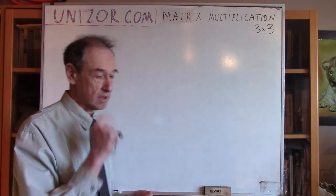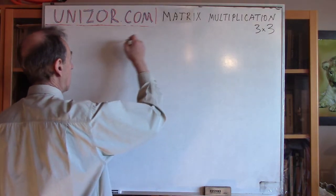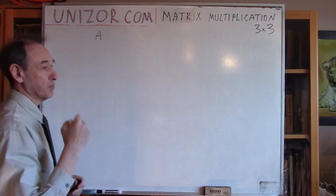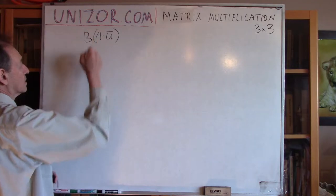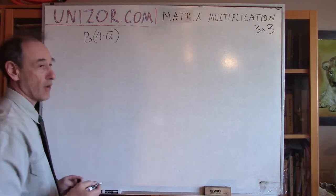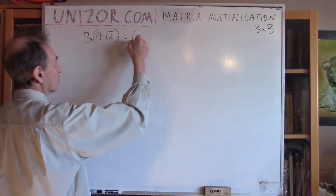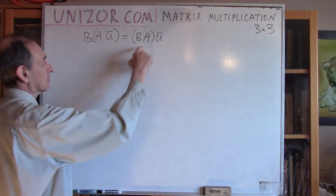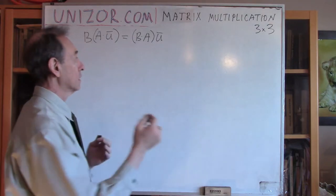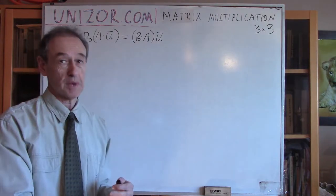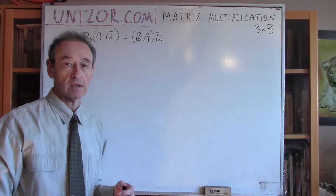So what was the result of the 2 by 2 matrix multiplication? If I have a matrix A applied to a two-dimensional vector U, and then matrix B is applied to the result of the first transformation, then I got some vector which can actually be produced by multiplying matrices B and A in this order according to a certain rule of multiplication. The result of multiplying a 2 by 2 matrix by a 2 by 2 matrix is another 2 by 2 matrix, and if that matrix is applied to the same original vector U, it produces exactly the same result.